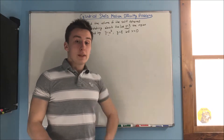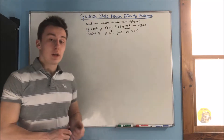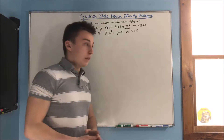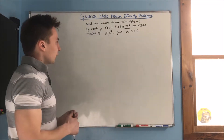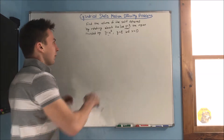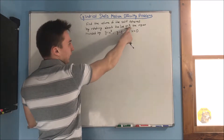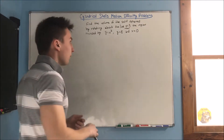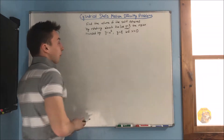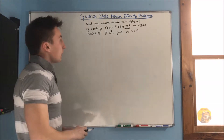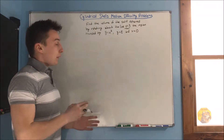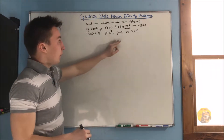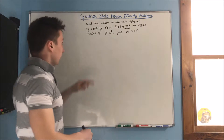In this video, we're going to be doing some cylindrical shell problems. These are going to be medium difficulty — last video was easy difficulty — so these are just going to be a little bit harder, because we're going to be rotating about a line that is not going to be the y-axis or the x-axis. Our first problem: find the volume of the solid obtained by rotating about the line x equals 3, the region bounded by y equals x cubed, y equals 8, and x equals 0.